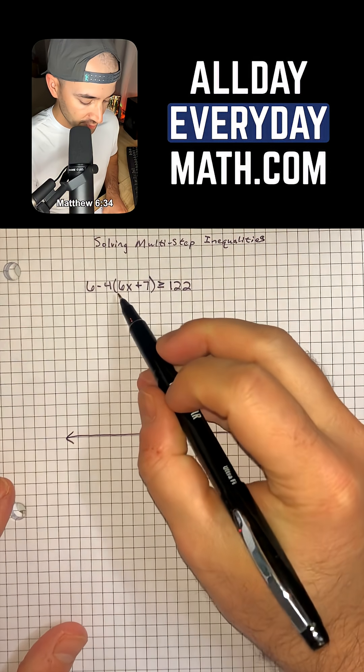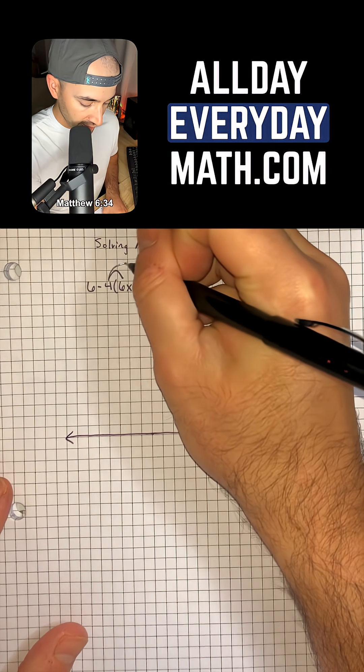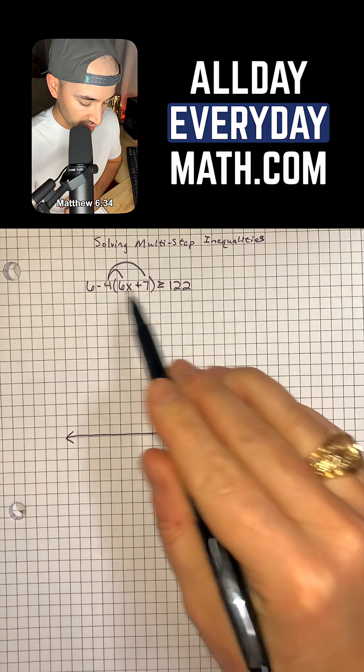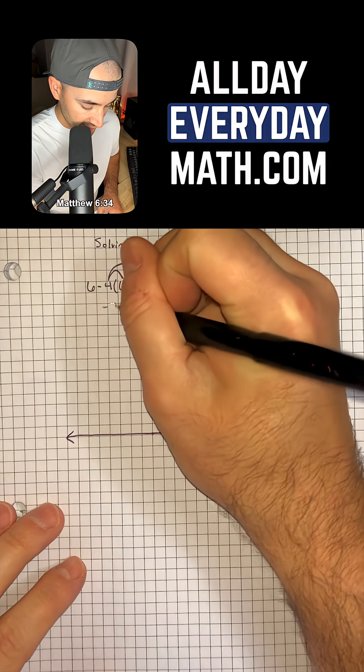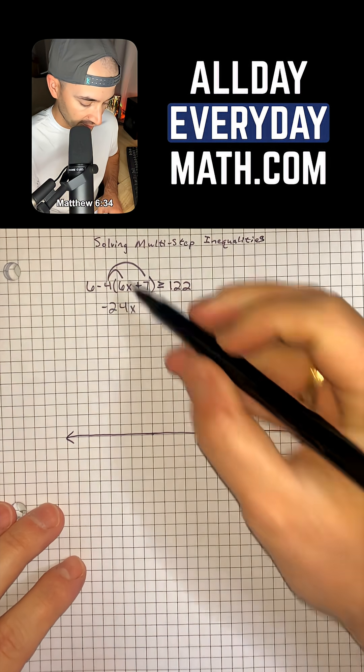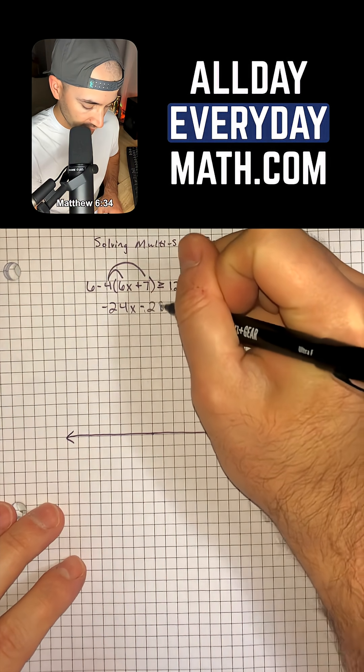So first thing is we have to get rid of this parentheses by distributing our negative 4 to both terms. So when we do that, negative 4 times 6x will give us negative 24x, and then negative 4 times 7 is negative or minus 28.